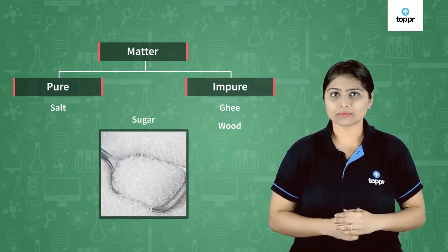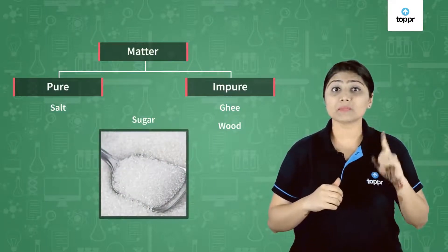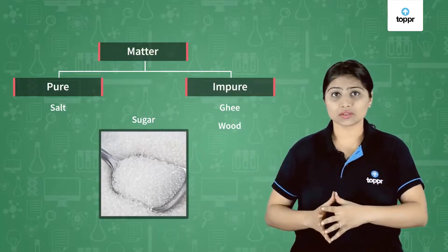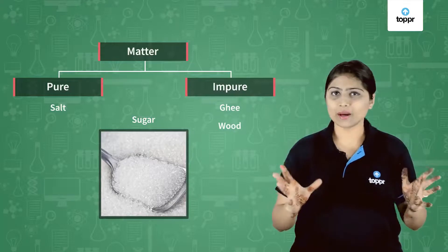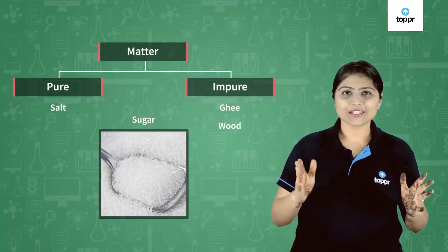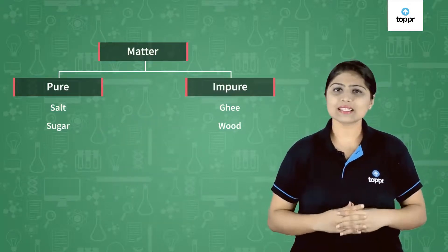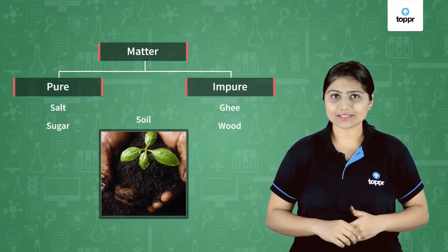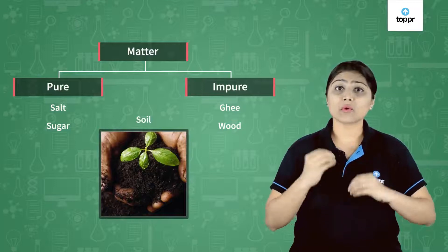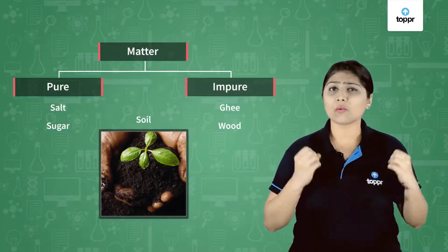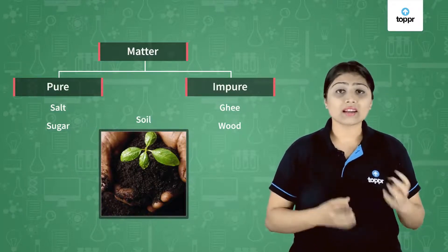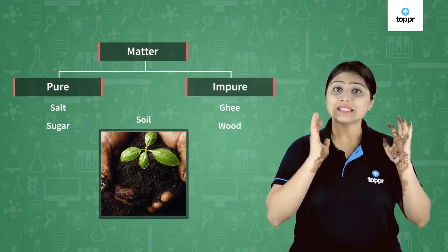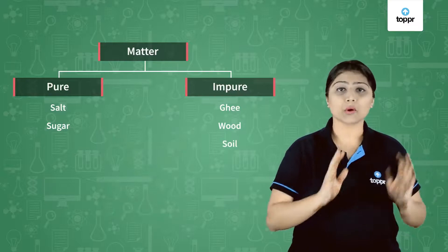Let's take the example of sugar. What is sugar made up of? It is just made up of one kind of particle — particles having the same texture. Again, 'dana dana eggs aman.' So sugar is also pure. Let's take soil. Is soil a pure substance? No. It is made up of organic matter, air, water, grass, organisms, and so many things. That means soil is impure.